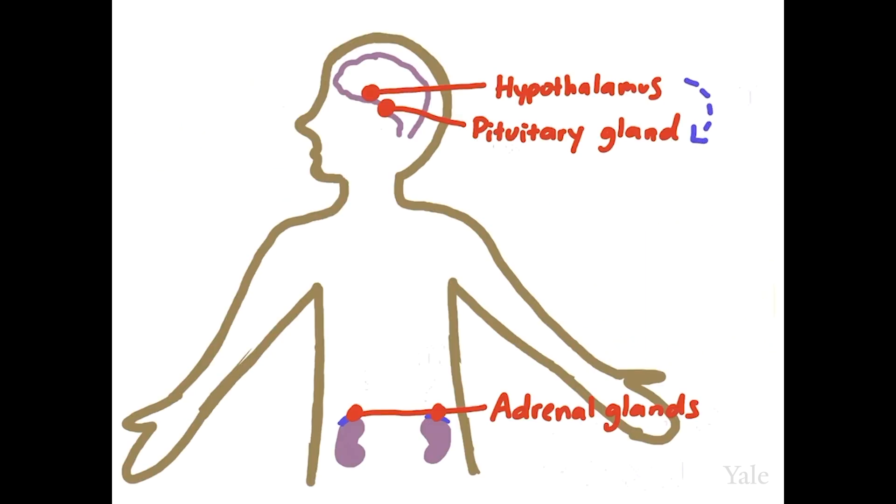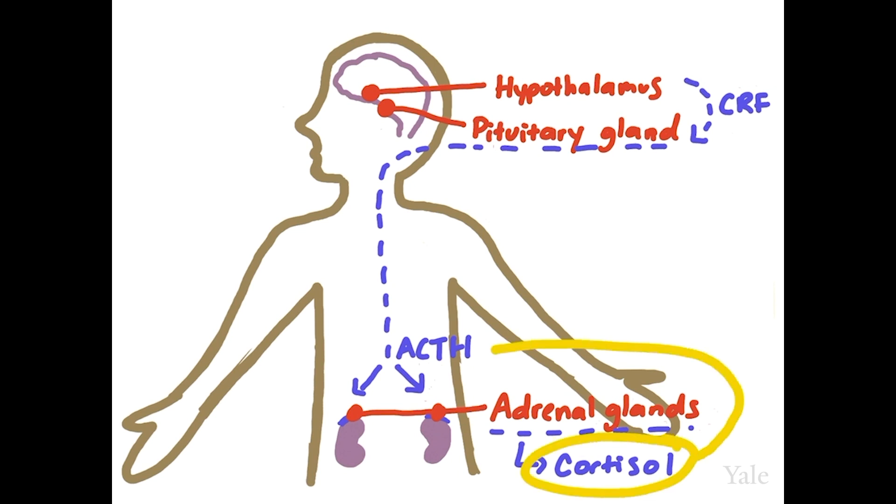This system has a clever self-regulating mechanism to prevent over-activation. High production of cortisol will actually inhibit the release of ACTH and CRF. This is a negative feedback loop that helps to protect our bodies from prolonged activation of the stress axis.